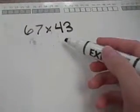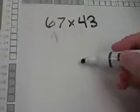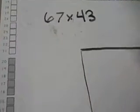Another way to multiply 67 times 43, or two two-digit numbers, is to use the lattice method. In the lattice method, the first thing I'm going to do is draw a rectangle.